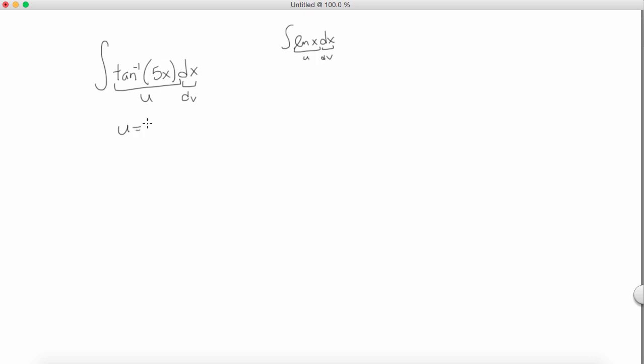So we set u equal to the arctangent of 5x. Now we know how to take the derivative of this right here. Let me put it over here.